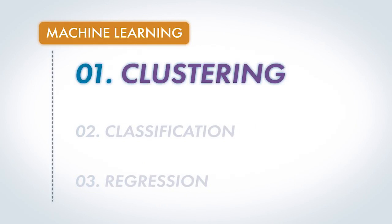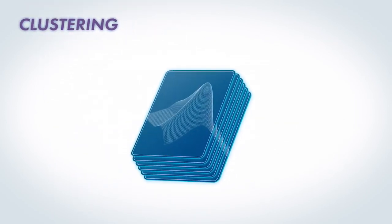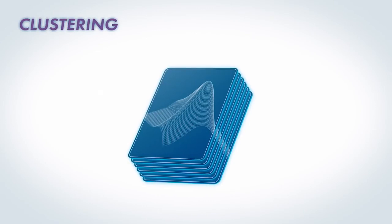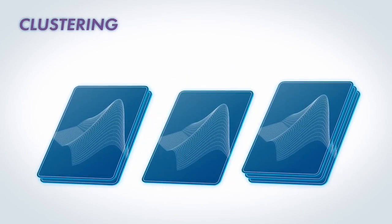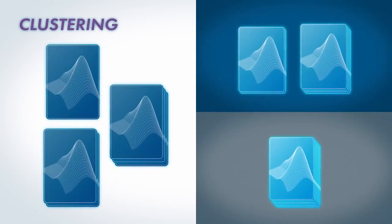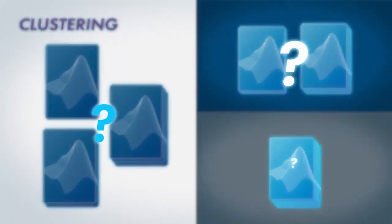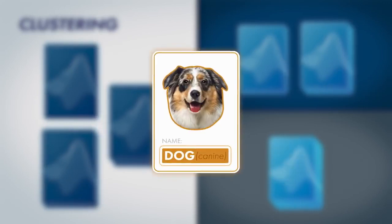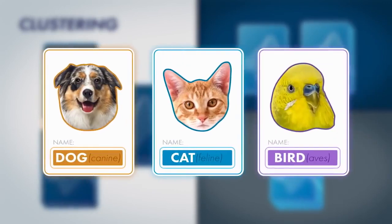First, we'll talk about clustering. Suppose I give you a stack of cards with pictures on them, and I ask you to sort the cards into groups. Different people group these cards in different ways. What's on these cards to cause that to happen? Well, they are pictures of dogs, cats, and birds.